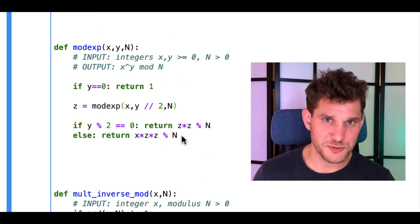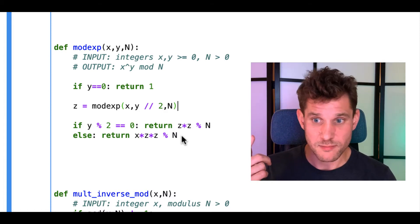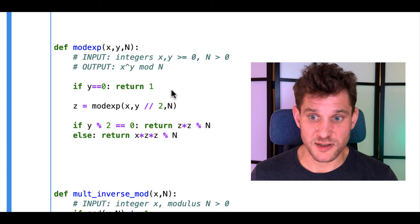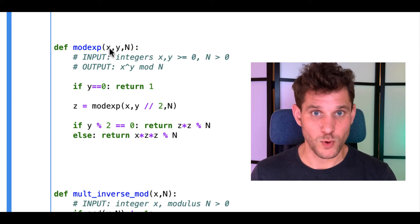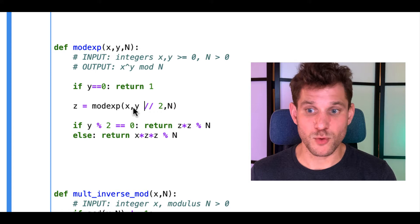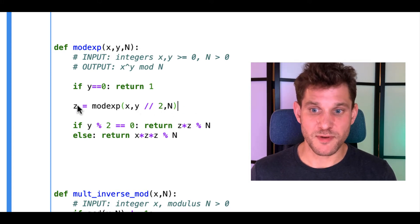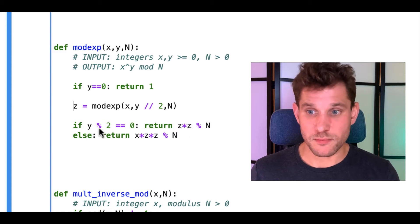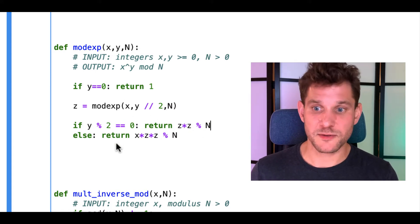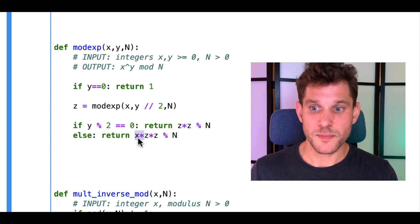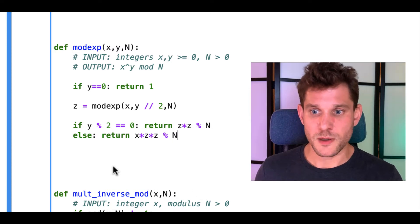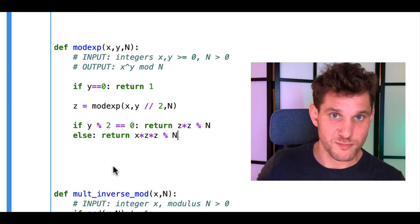We also learned about how to do modular exponentiation, where we have to take x to the y mod n. There's a very simple algorithm for computing this. First you check if one of the inputs is zero, then you return one because x to the zero is always one. Then you compute mod-exp of x, floor of y over 2, and n, calling that value z. If y is even, you simply return z squared mod n. If y is odd, you lost a factor of x, so you multiply x times z squared mod n. This is a very fast algorithm — it takes on the order of n cubed, where n is the number of bits of x and y.